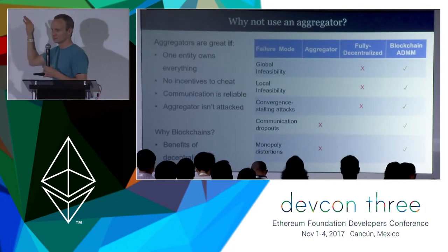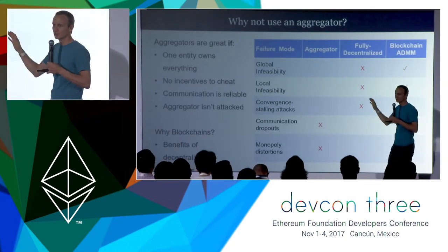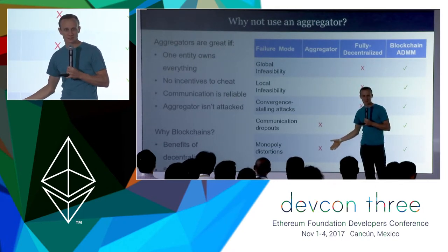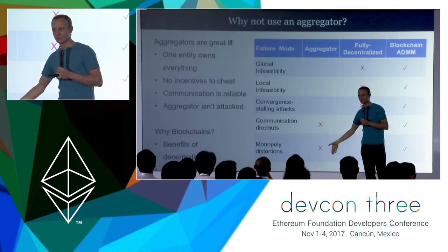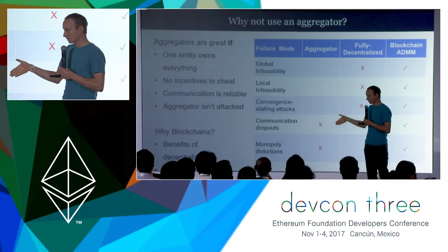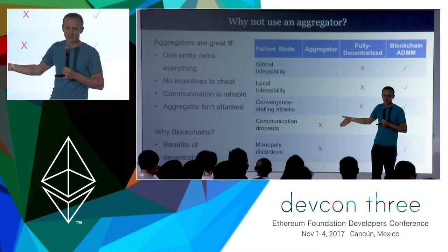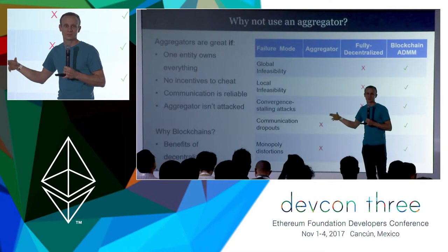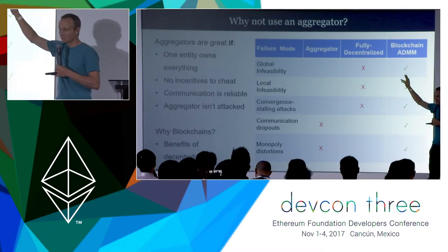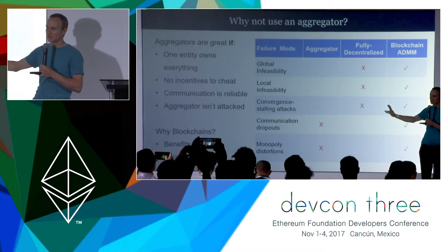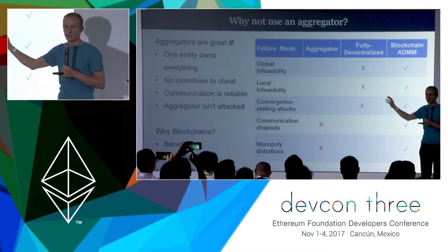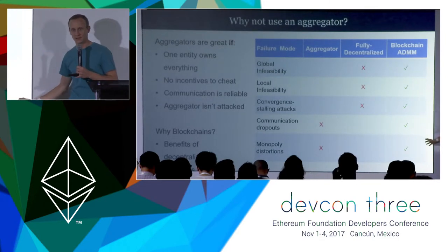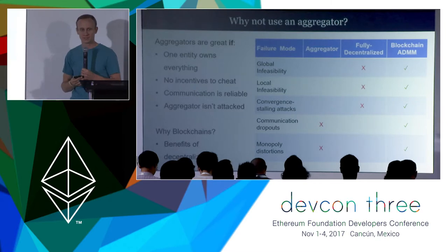Thinking about the different ways that these models fail: aggregator-coordinated decentralized optimization is prone to monopoly distortions — any time there's a market operator or scheduler with their own incentives, you may not want to trust a monopoly aggregator. They're also prone to communication dropouts. Conversely, the fully decentralized models address those but expose us to other weaknesses. By using a blockchain to provide a global information layer, we're able to have the benefits of the centralized aggregator problem while also avoiding the pitfalls of the fully decentralized problem.